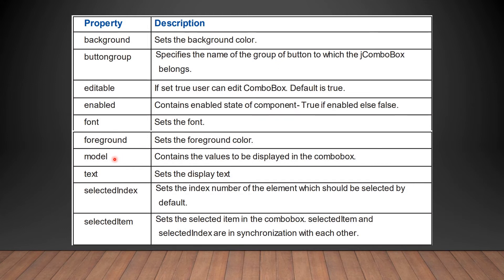The model property contains the values to be displayed in the combo box. The text property sets the display text. Two important properties are selectedIndex and selectedItem. selectedIndex sets the index number of the element selected by default. selectedItem sets the selected item in the combo box. These two properties work in synchronization with each other.